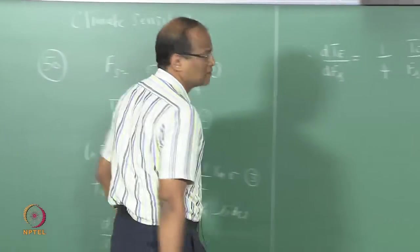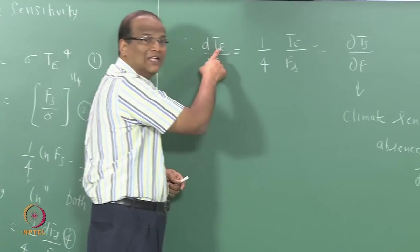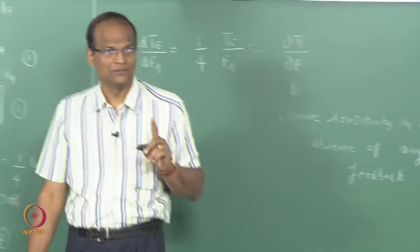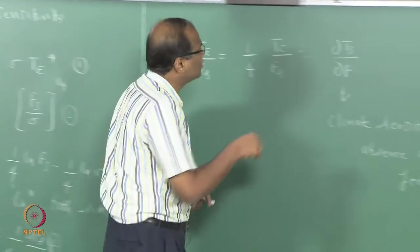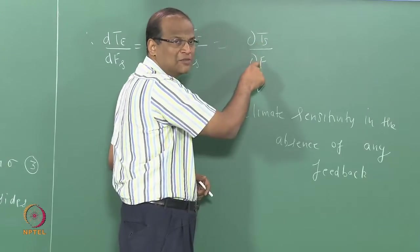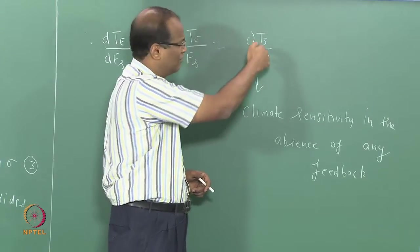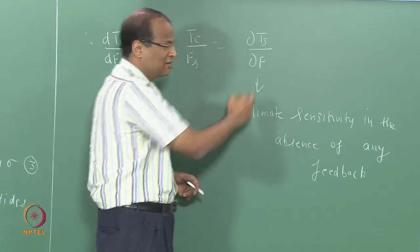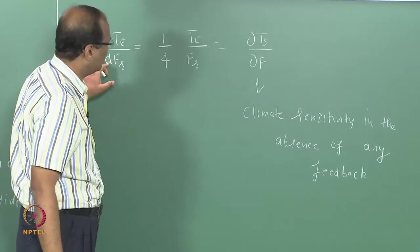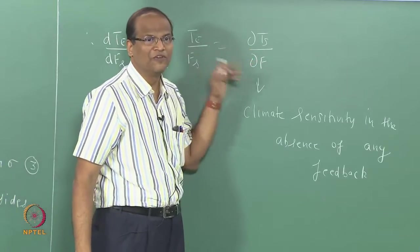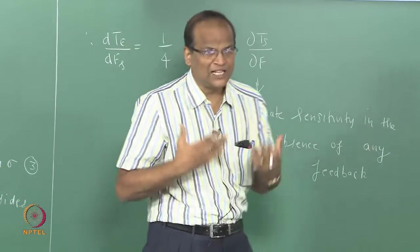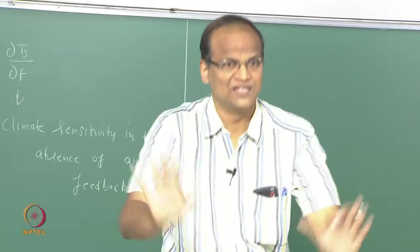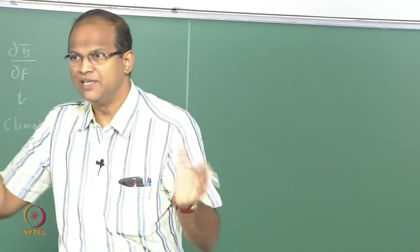There is a very fine distinction. T_e is the equilibrium temperature of the earth. T_s is the global mean surface air temperature. But the rate of change of the global surface air temperature with respect to F, the partial d of T_s with respect to F, will be the same as d T_e by d F_s in the case when there is no feedback from other things. Basically the temperature as such is a consequence of the solar radiation coming in and the emission. That is a basic assumption.